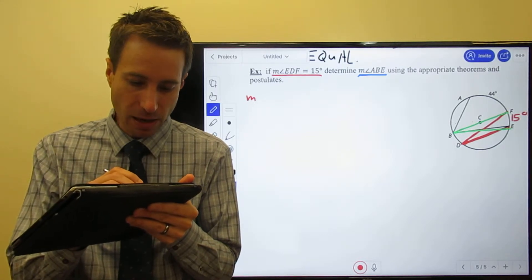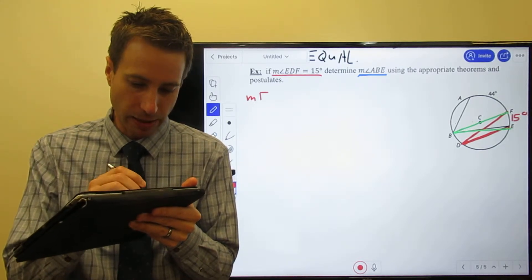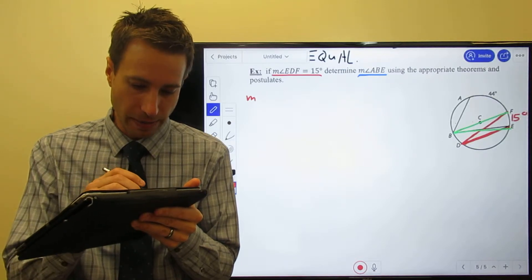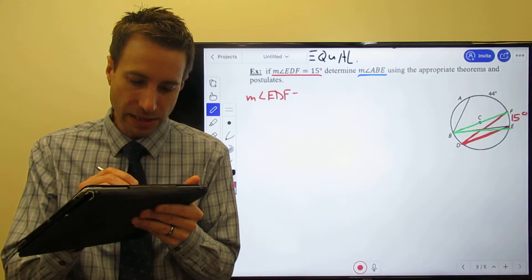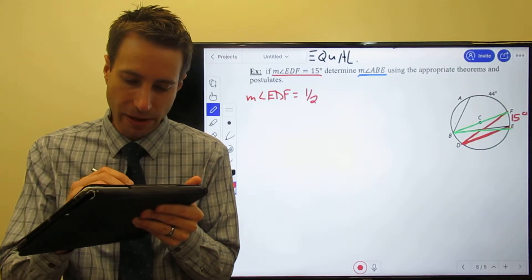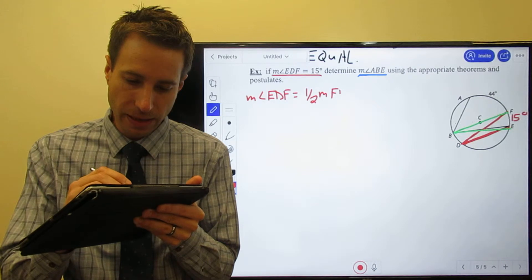So the measure of angle EDF - it's an angle, don't want to forget my angle symbol - E, D, F is equal to one half the measure of FE.